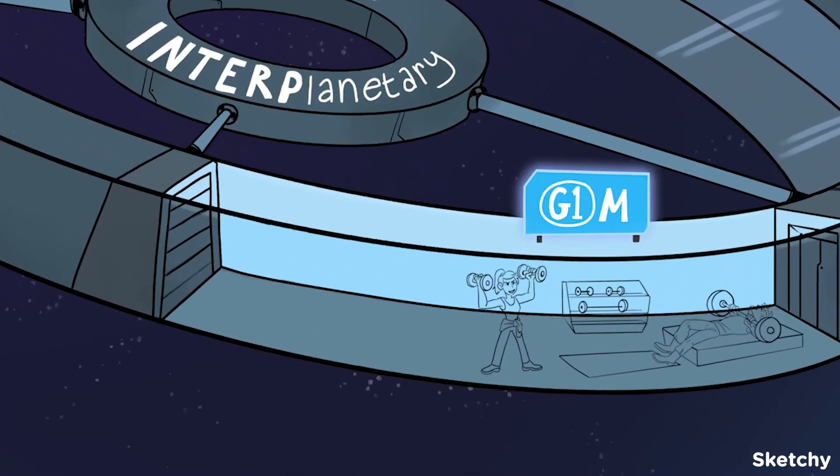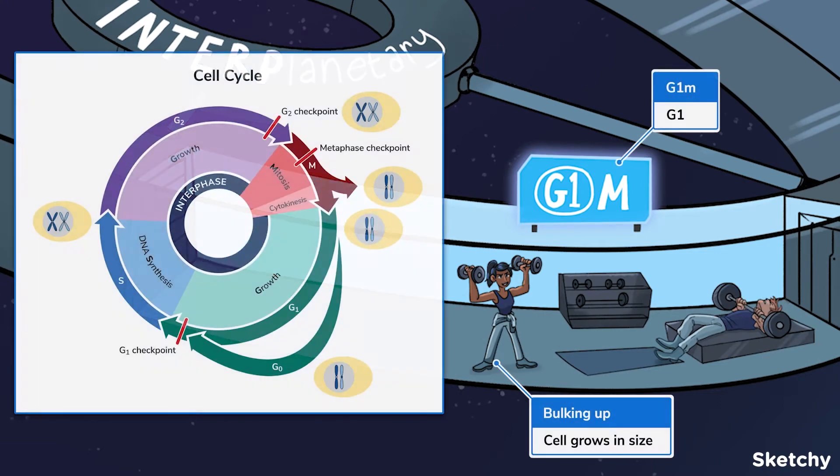Here at the gym is where nerds like myself get swole. G1, the first gap or growth phase, is essentially a gym for cells. G1 is usually the longest stage of the cell cycle. In G1, the cell ramps up protein synthesis while increasing its size and number of organelles to prepare for DNA replication.